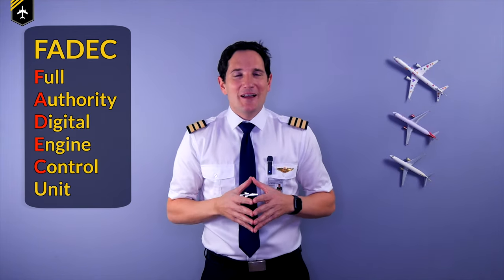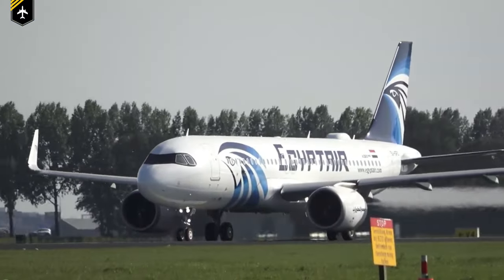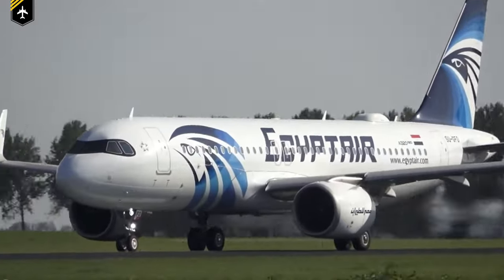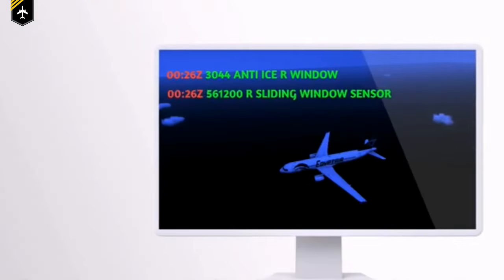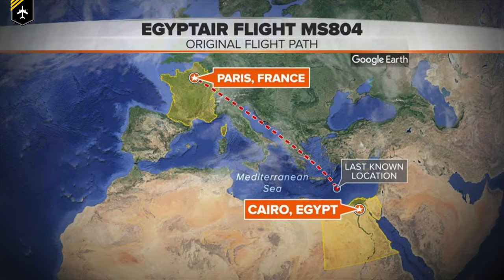This is not the only monitoring function transmitted via ACARS. Various other systems are sensored — for example, the FADEC, the Full Authority Digital Engine Control unit — transmitting engine parameters such as oil quantity, fuel flow, engine vibrations, and engine abnormalities directly to the maintenance office in real time. It is an airline operator's own decision how much equipment shall be monitored and transmitted to dispatch.